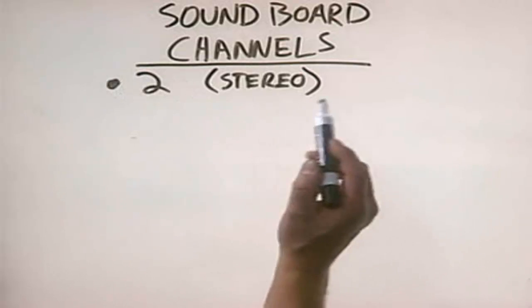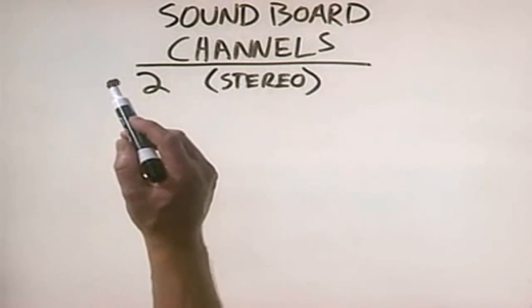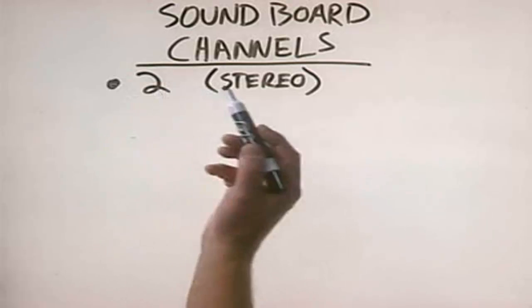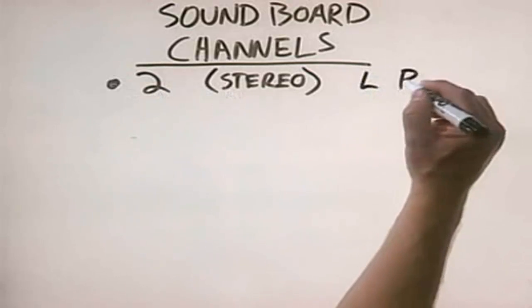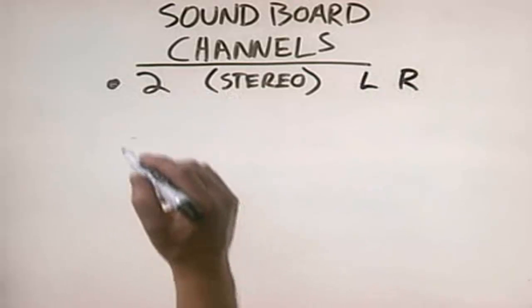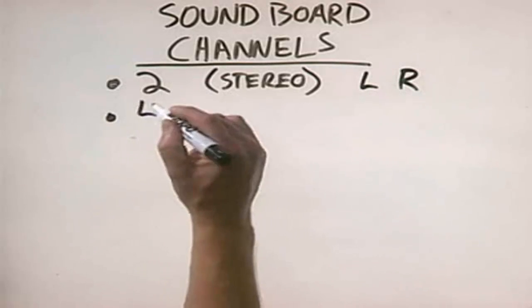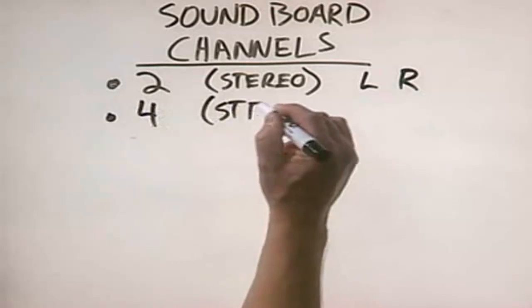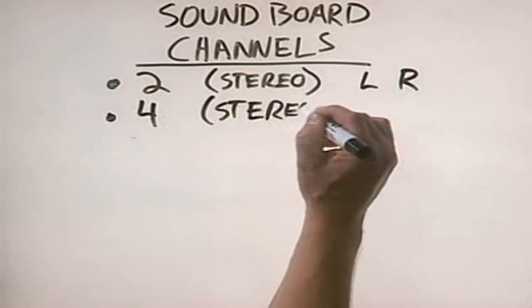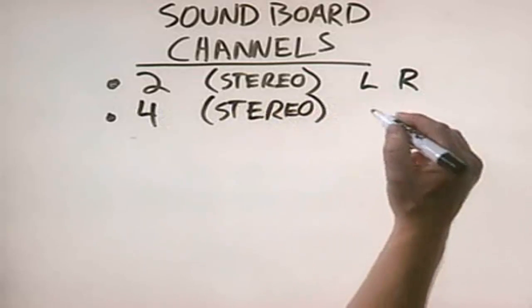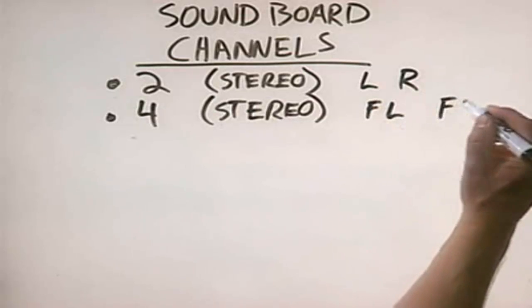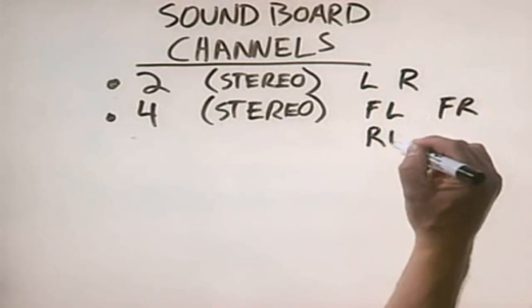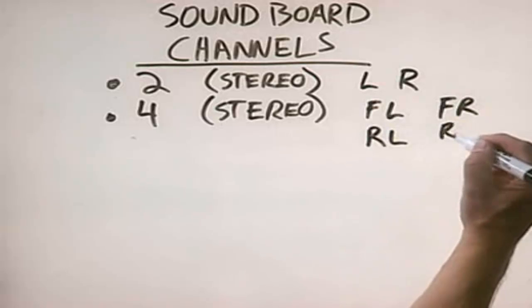Today, we don't even worry about those. Your basic low-end sound card will at least offer two channels, which gives you stereo left and right. You can also purchase a four-channel stereo audio board, which gives you front left, front right, rear left, rear right.